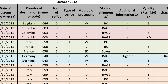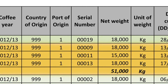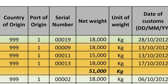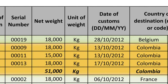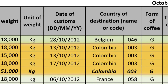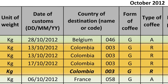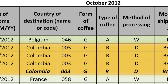The countries of destination are now grouped alphabetically, starting in this case with Belgium. The total net weight and value by country of destination is then calculated for those shipments where the form and type of coffee and method of processing are identical.